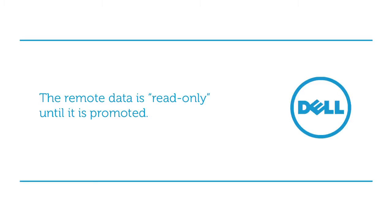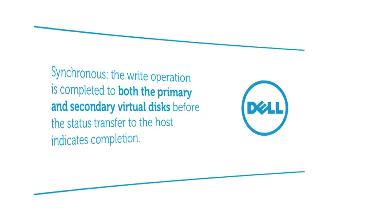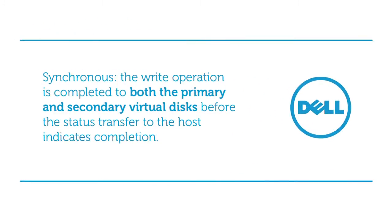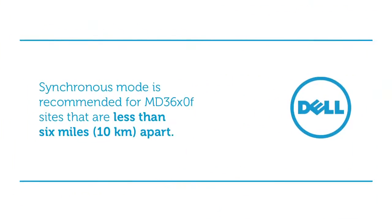The replication process can be synchronous or asynchronous. Synchronous means that the write operation is completed to both the primary and secondary virtual disks before the status transfer to the host indicates completion. This method of replication may impact performance over long-distance transmissions within the fabric between the local and remote site. Synchronous replication is recommended for inter-campus replication where the MD 3600F sites are less than six miles apart.